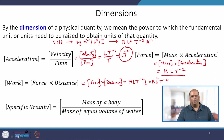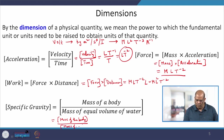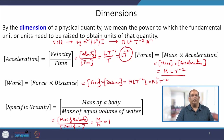Now, specific gravity is defined as the mass of a body divided by the mass of an equal volume of water. If we write this as mass divided by mass, both will be M/M, resulting in a pure number 1. Hence, specific gravity is dimensionless.